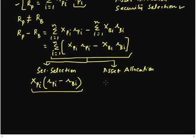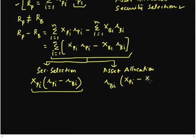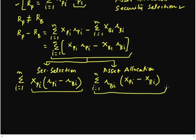The second reason is asset allocation. It could be that the returns of my selected securities are not very different from the benchmark, and what is making a difference is how I am distributing my money over different assets — the weightings I'm using. We can write this as RBi times the difference in the weighting scheme, XPi minus XBi. Since this is for all securities in all asset classes, we include the sum sign. This is the attribution to asset allocation.